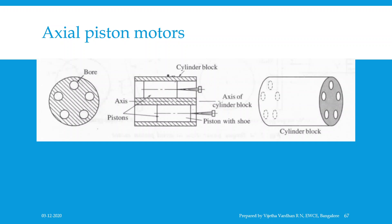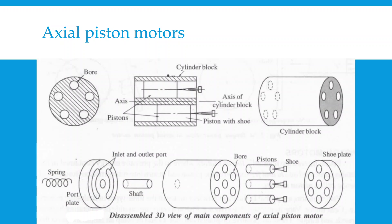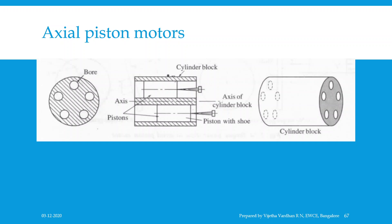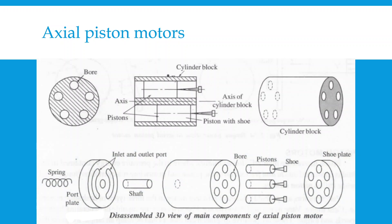Let us understand how axial piston motors work. In axial piston motors, the pistons reciprocate parallel to the axis of the cylinder block, as you can see in the concept figure. The main parts of axial piston motors are: cylinder block, piston with shoe, shoe plate, spring, shaft, and port plate. The number of pistons equals the number of bores in the cylinder block, and the corresponding number of shoes, plate, and holes can be seen in the figure.